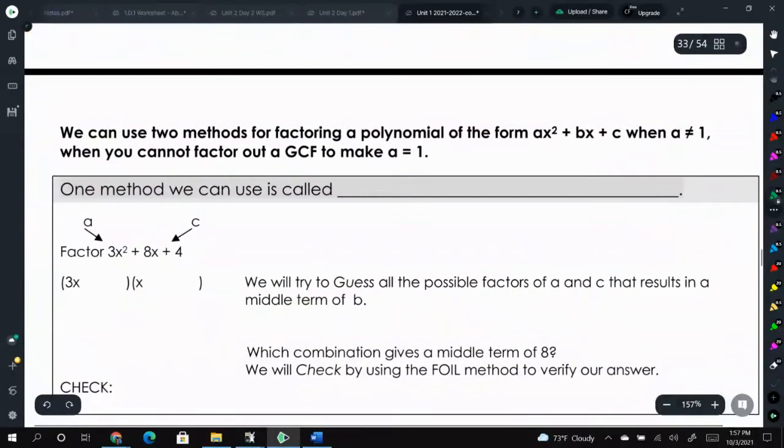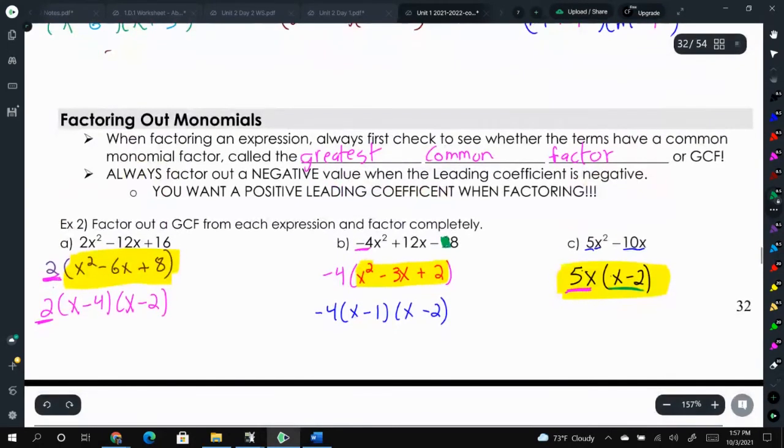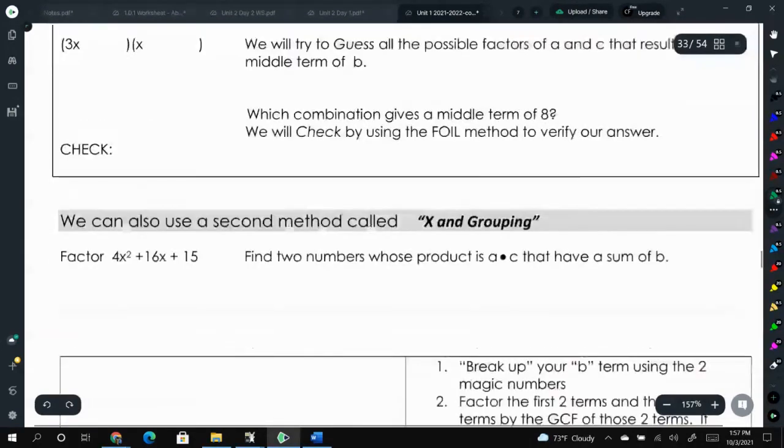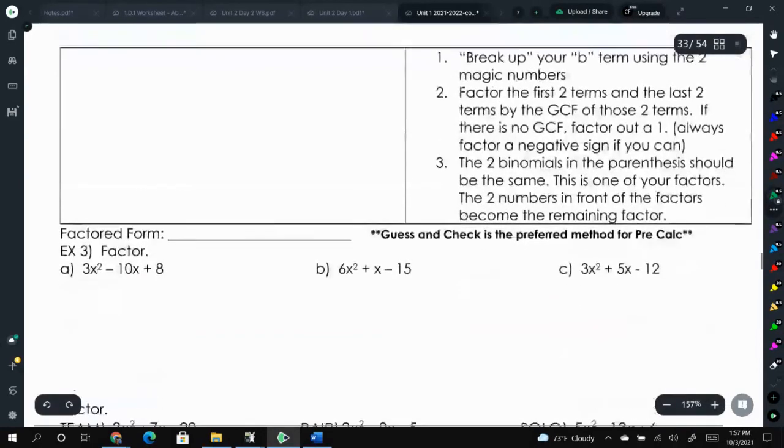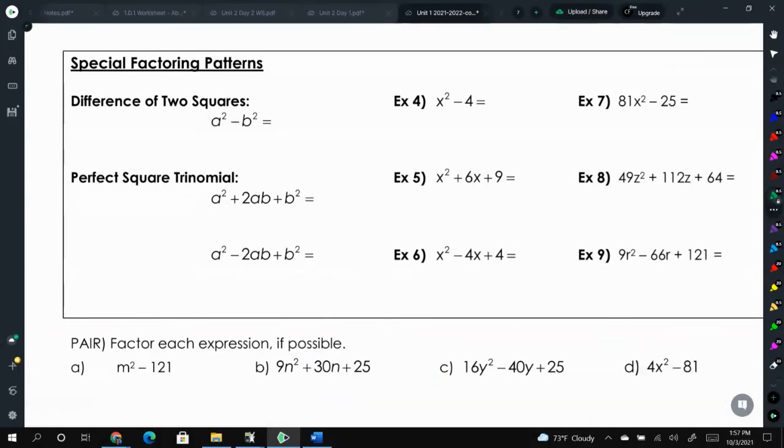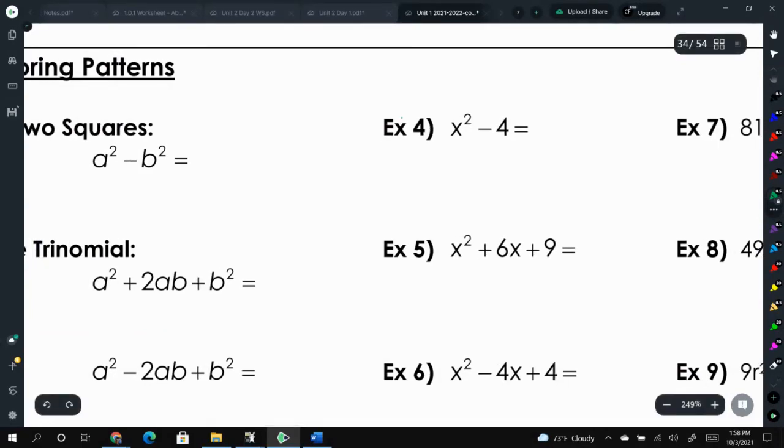We are going to skip, for now, factoring when a is not 1 where you can't take out a GCF. Like all these up here, we are able to factor out a GCF and our a value is 1, so we could do what we did up here. These problems, you can't do that, and we'll talk about that later. I do want to skip here to look at some special patterns. Examples 4, 5, and 6 here. The a value is 1. And what that allows us to do is it allows us to have some shortcuts of special patterns.